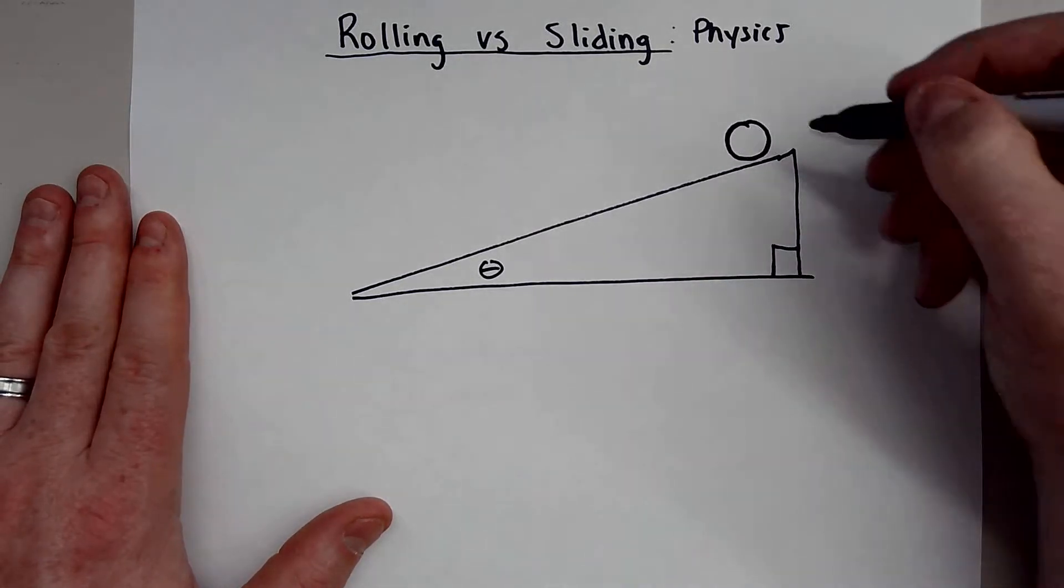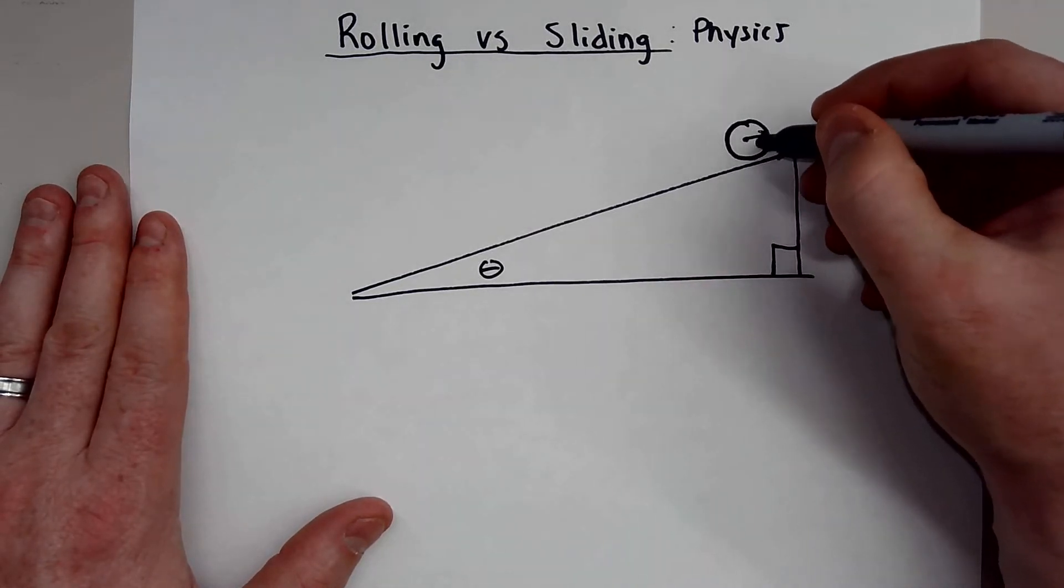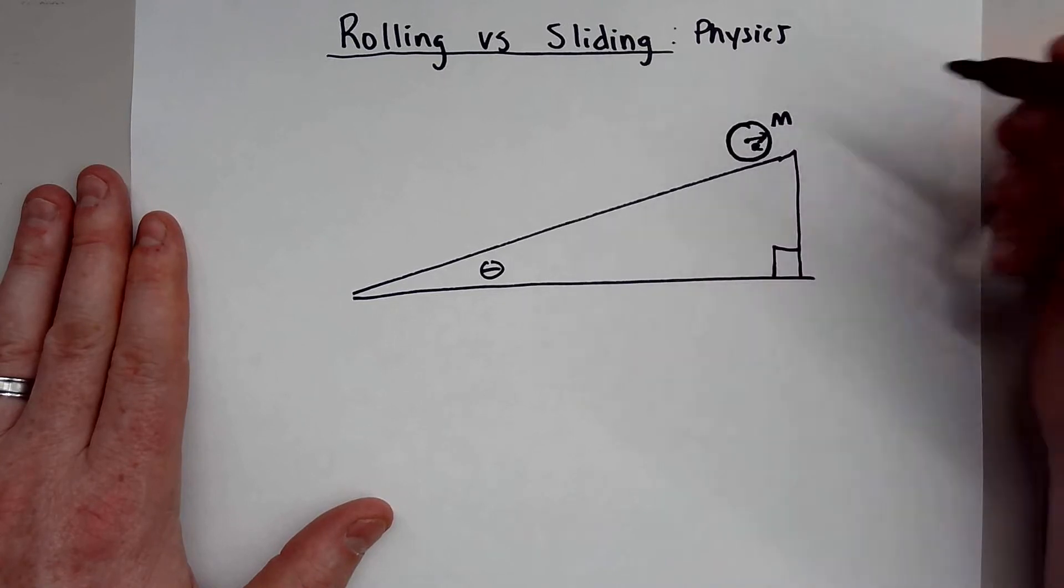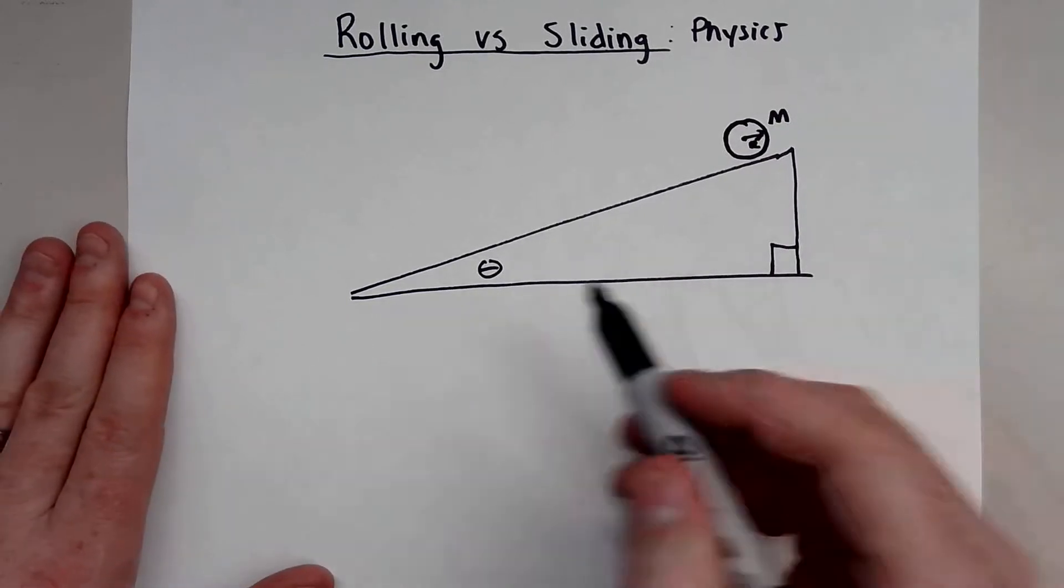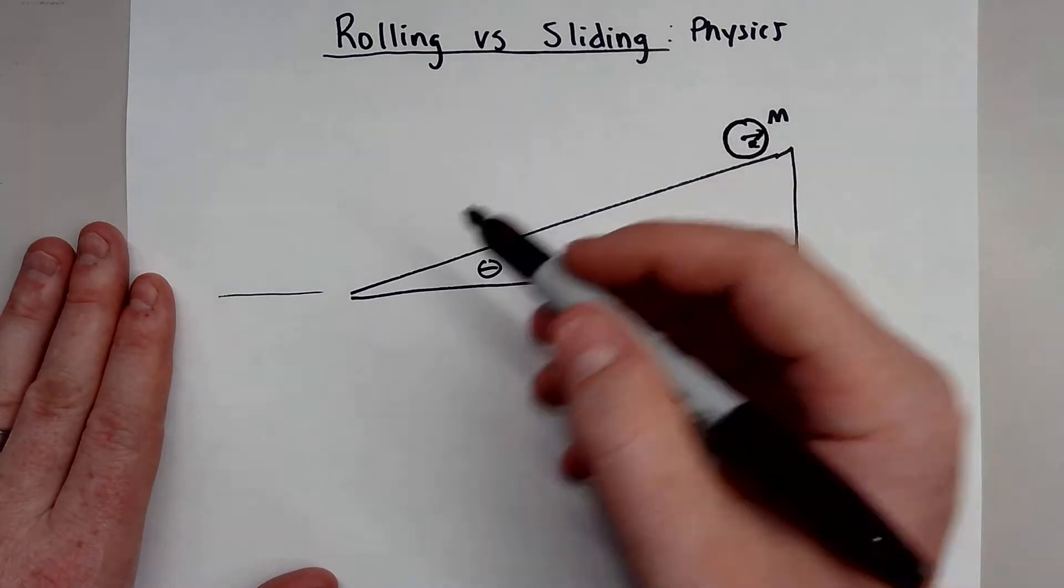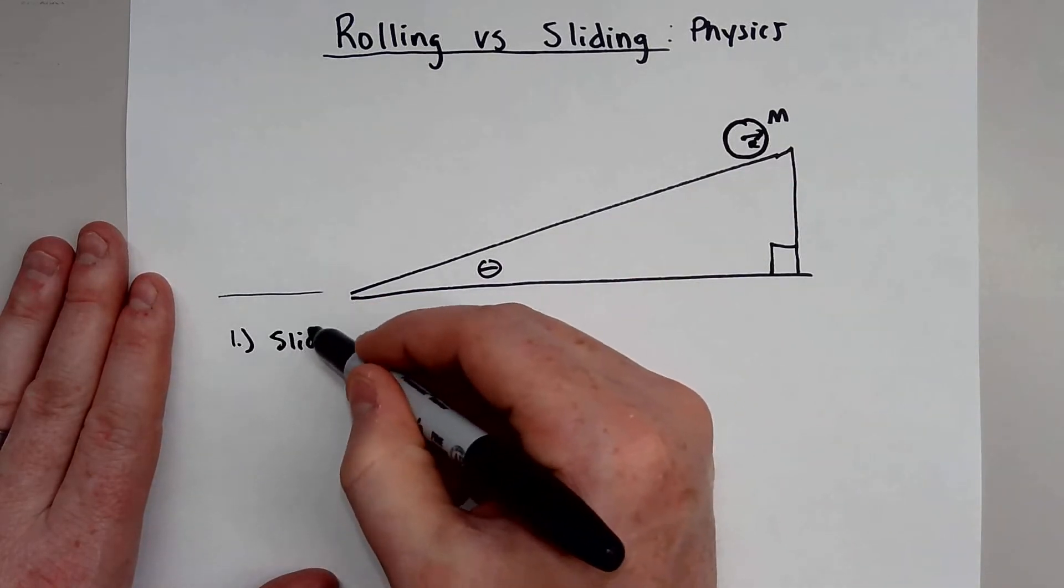You have a ball. This ball has obviously a radius R and a mass of M. And it is going to, let's say the first situation is, let's say it slides down the ramp.